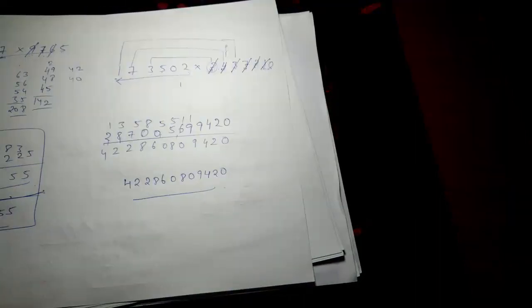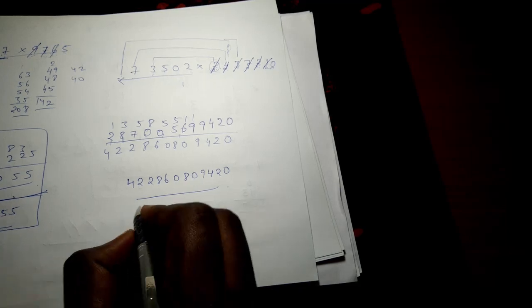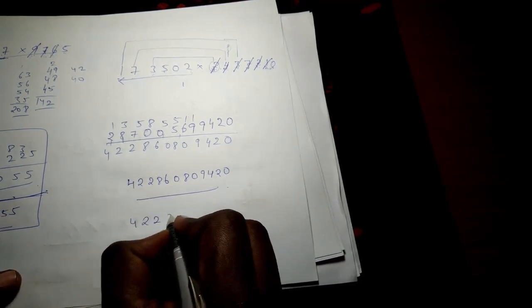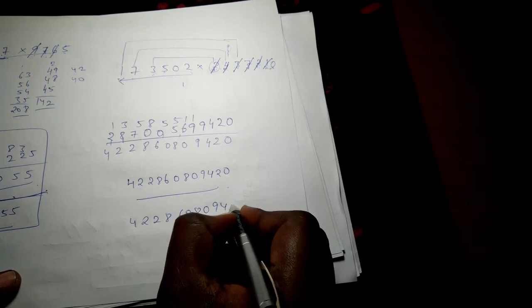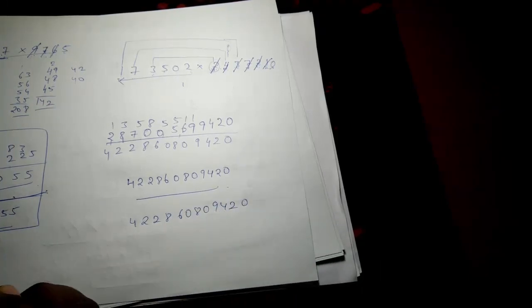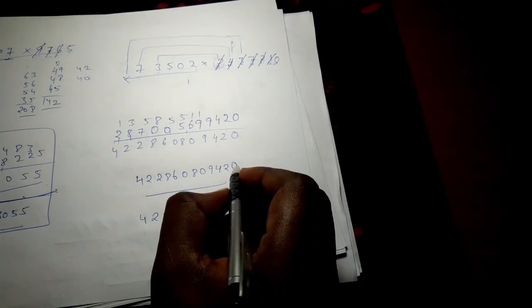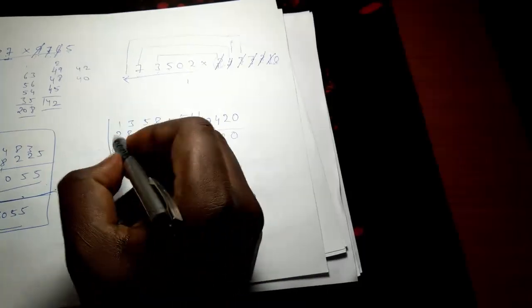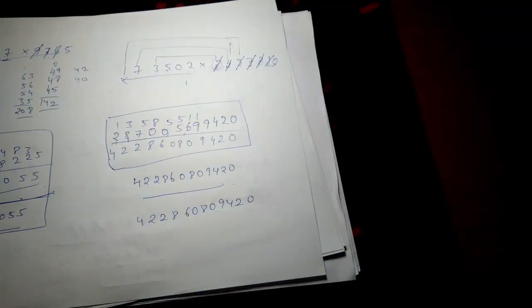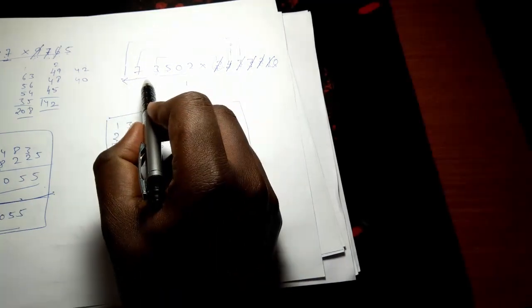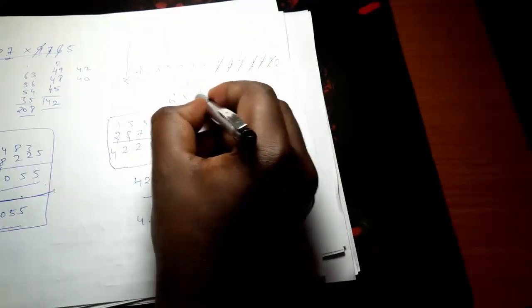Let me confirm this answer. Checking on Google: the answer is 422,860,809,420 — which is exactly the same result we obtained. Notice the amount of space required for this entire calculation of a 6-digit number multiplied by a 7-digit number is just this much.